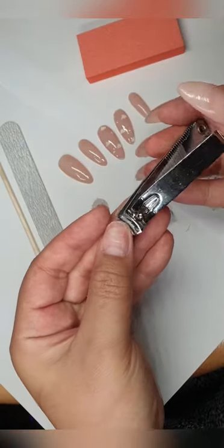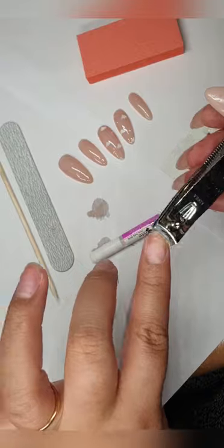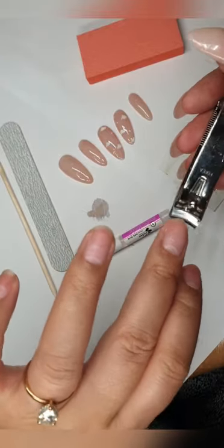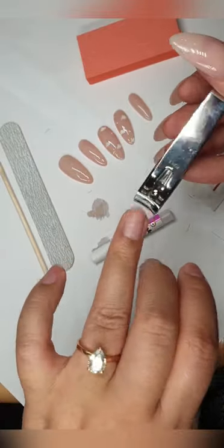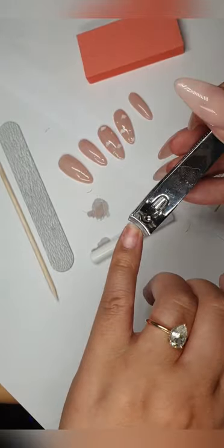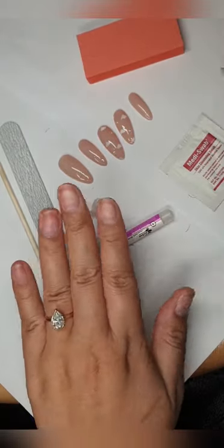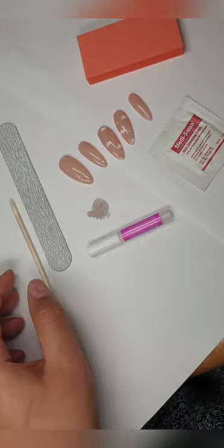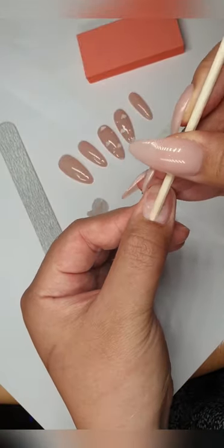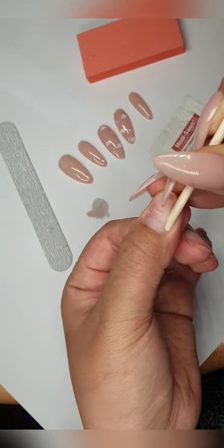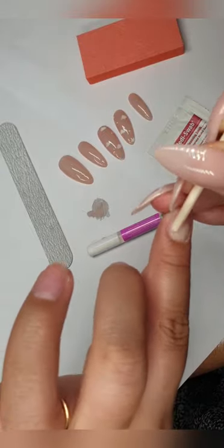I start prepping my nails by trimming them. Then, with the orange wooden stick included in your kit, use it to push up your cuticles.